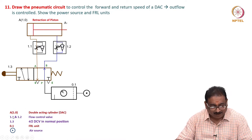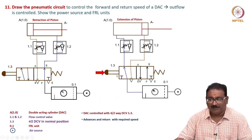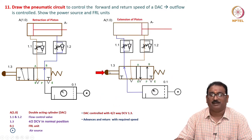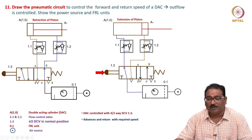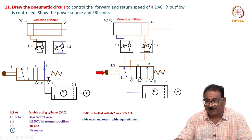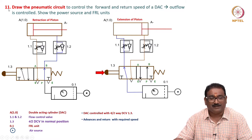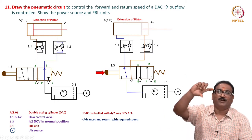Similarly, always list the component list. When you press this button, the inlet is bypassed through the check valve. Return flow is always through the metered orifice - that is why outflow is controlled. If they ask for inflow control, reverse these two valves in the other direction.